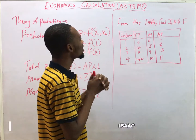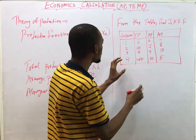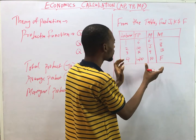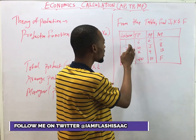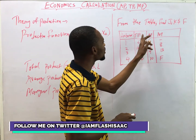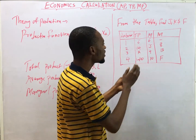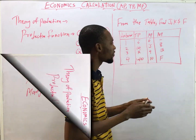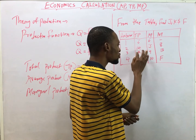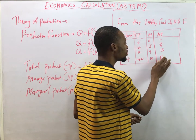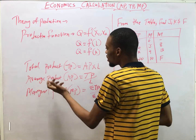Look at this typical question: from the table, find j, k, and f. This table shows components of the Theory of Production — the units of labor: one, two, three, four — then Total Product, Average Product, and Marginal Product. We are asked to find j, k, and f. J is the Average Product, k is the Total Product, and f is the Marginal Product.